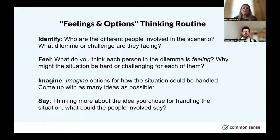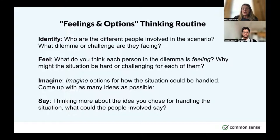Once we've level-set who's involved and what they might be feeling, students move to Imagine — probably the favorite step — where they imagine how the situation could be handled. The goal is to brainstorm all different ideas; no ideas are bad ideas. What could Kat do? Should she approach her classmates? Should she go to a trusted adult or teacher? What if she did nothing? There are a lot of imagined possibilities, and then ultimately students pick one and identify what they would exactly say or do very specifically. The idea is that they now have a way to think through this kind of situation they may face in their digital lives, including the actual words they might use to address it.